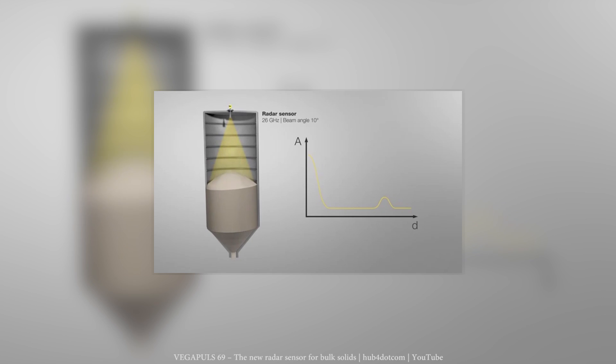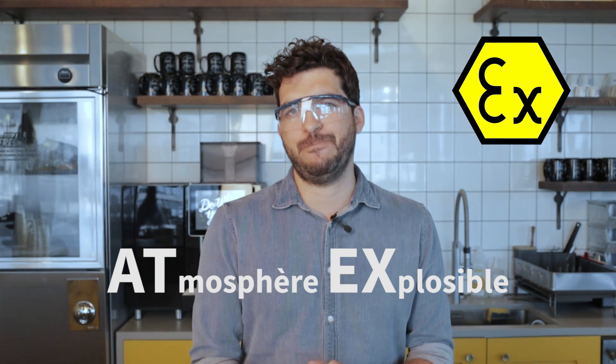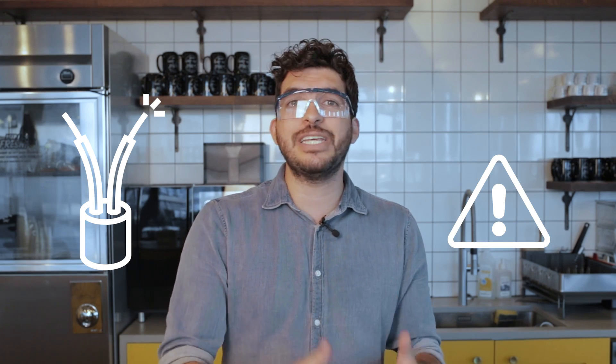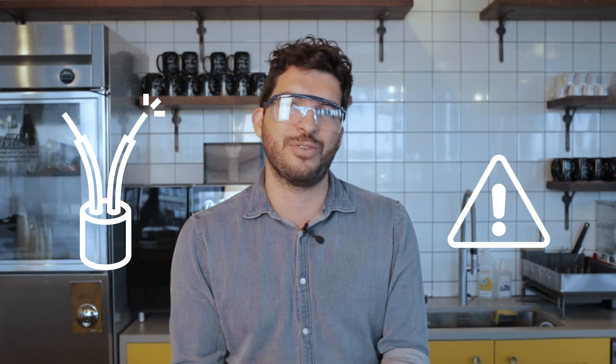Now imagine you go to a milk powder production plant and you need to measure the level on a storage silo. In this case the level measurement should comply with a European directive known as ATEX. In the case of milk and other dust storage facilities, instruments should be intrinsically safe, or XII. This means that the instrument will not become an ignition source or will not heat up to a temperature that could ignite the surrounding explosive atmosphere.